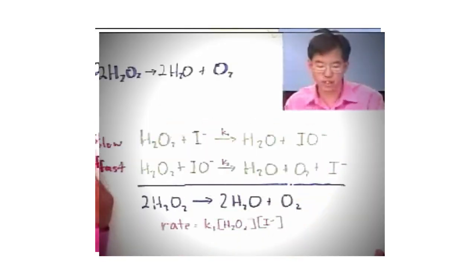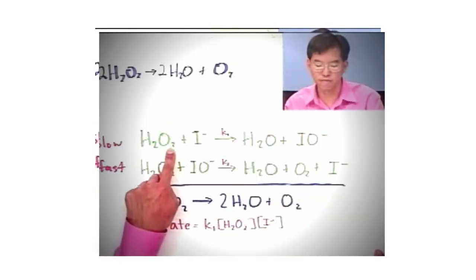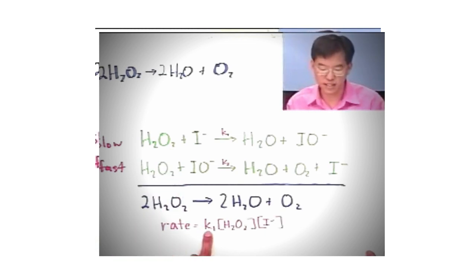The third thing is that it could appear in the rate law. So if we write down what the rate expression should be for this reaction, the slow step is the first step. So the rate is going to look like K1 times the hydrogen peroxide concentration times the I- concentration. So the catalyst appears in the rate law, meaning that if you add more catalyst, the reaction goes faster. That's not an unreasonable idea.